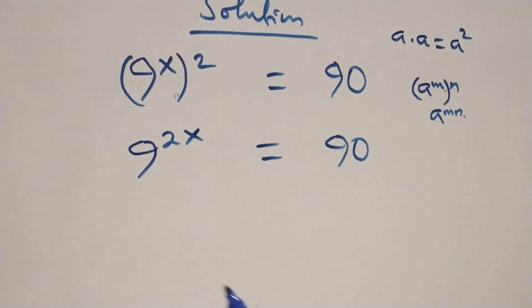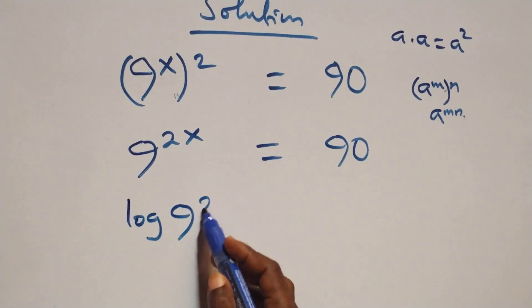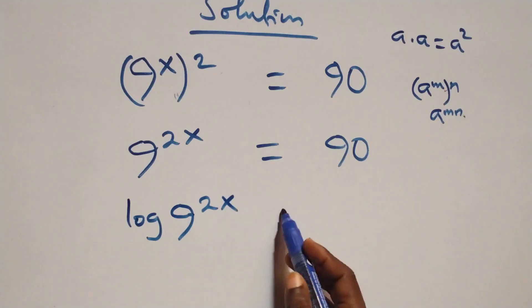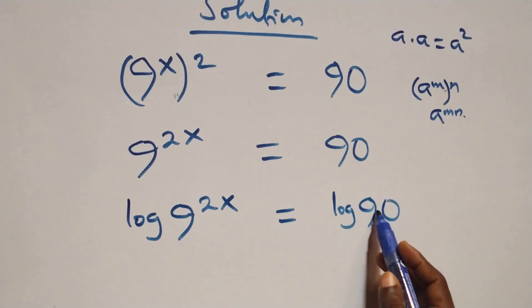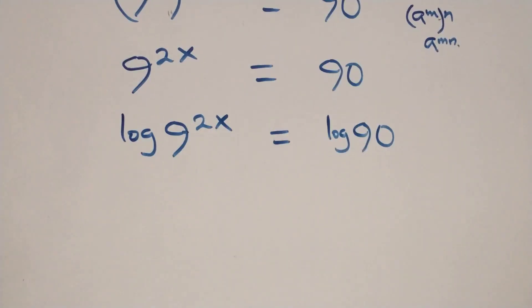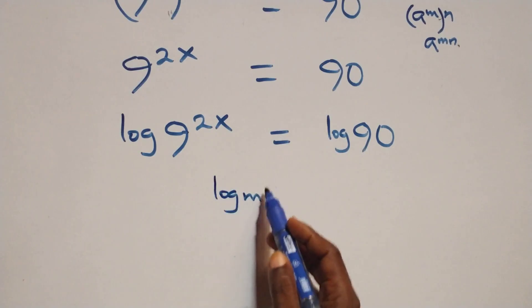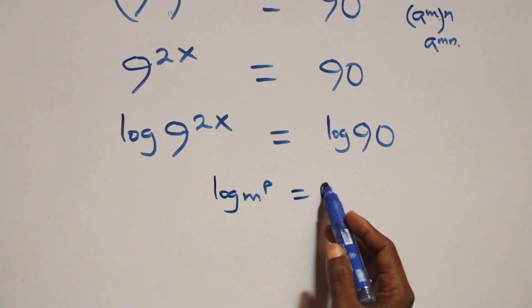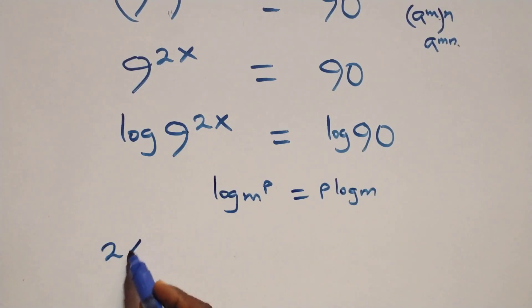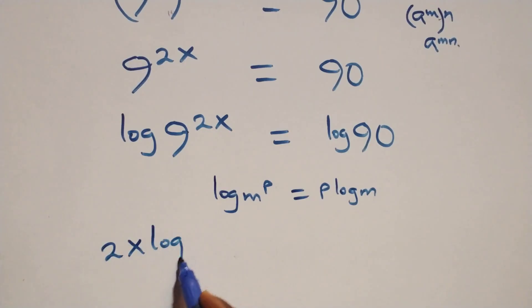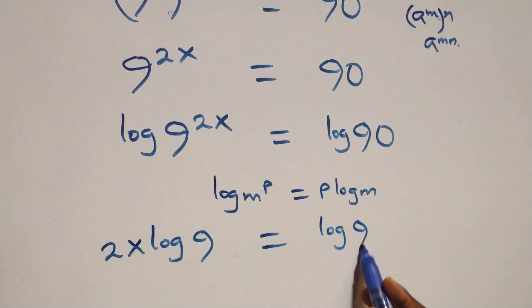The next step: we take the log on both sides. We have log of 9 raised to power 2x equals log 90. Then we apply the power rule of logarithms: log of n raised to power p is the same as p times log n. So we have 2x times log 9 equals log 90.